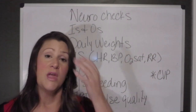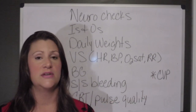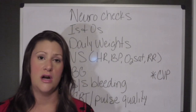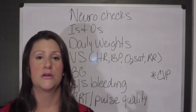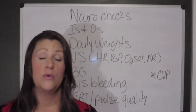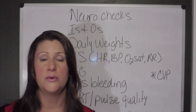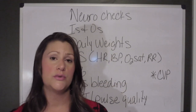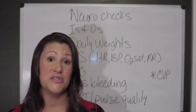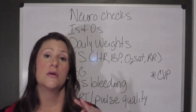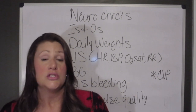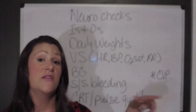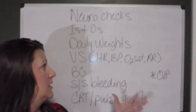With hypovolemic shock, the treatment is replacing the loss of volume. If the patient is bleeding, we give blood; if they've lost fluid, we give fluid. The rule of thumb to remember is 3 to 1 — the patient will receive 300ml of isotonic solution for every 100ml of fluid loss. Monitor fluid replacement efficiency with your CVP measurements and daily weights.